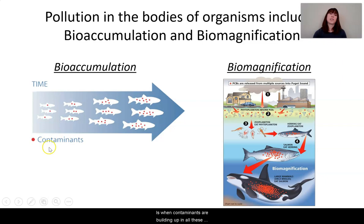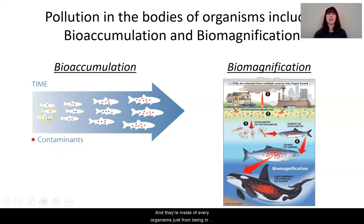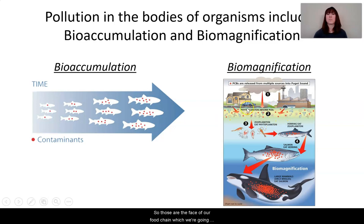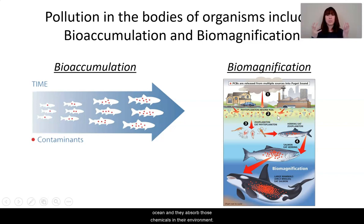Bioaccumulation is when contaminants — represented by red dots — are building up in individual organisms just from being in the environment. Biomagnification is a little different. Let's imagine there are some contaminants, for example PCBs — a chemical put off from urban environments. Phytoplankton, the base of our food chain, are teeny tiny plant-like organisms living in the ocean, and they absorb those chemicals from their environment. They are then eaten by zooplankton — you might remember the copepod-looking creature from SpongeBob called Plankton.